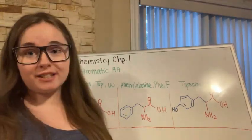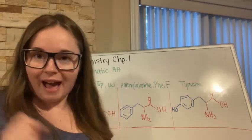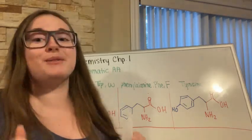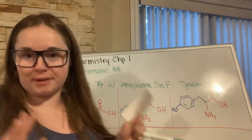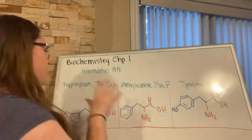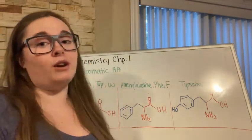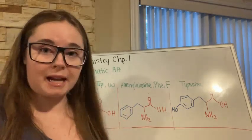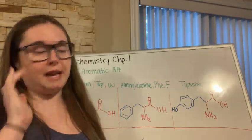Tryptophan, phenylalanine, and tyrosine are the three aromatic amino acids that you need to know for the MCAT. Knowing their structures is really important.